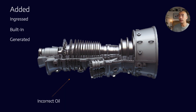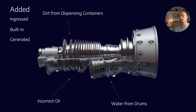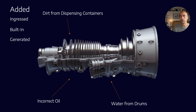Then you've got added contaminants — this could be a variety of things. Maybe it's someone putting in the incorrect oil, maybe it's water from drums that have breathed. Basically, if you put drums out in the sun, as they heat up and cool down they can pull moisture from the air through the bung, eventually leading to water contamination in new oil. Then there's dirt from dispensing containers — on most sites, housekeeping isn't the best, and you'll see dispensing containers that haven't been wiped down or lids left open so dust blows in. Dirt seems innocuous, but silica in particular is a highly abrasive material that can cause a lot of erosion.